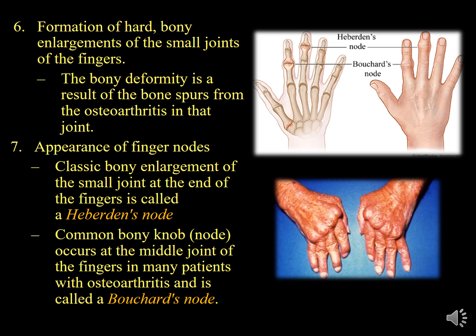Importantly, Osteoarthritis of the small joints of the hand causes bony swelling at the distal and proximal interphalangeal joints. Rheumatoid arthritis does not affect the distal interphalangeal joints. Heberden's nodules occur at the distal interphalangeal joints and Bouchard's nodules at the proximal interphalangeal joints — these are specific to Osteoarthritis. The swelling in rheumatoid arthritis is soft tissue swelling, not bony swelling, distinguishable by clinical examination.